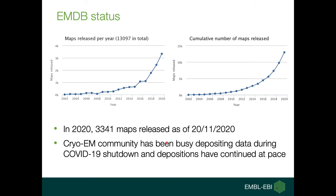Here are two plots. On the left it shows the maps released per year, and on the right it gives the cumulative number of maps released so far. Currently we have 13,000 maps. Even during the COVID-19 lockdown, the EM community kept a good pace depositing data into EMDB. With so much data coming to us, what kind of validation EMDB provides is a key point to our users.